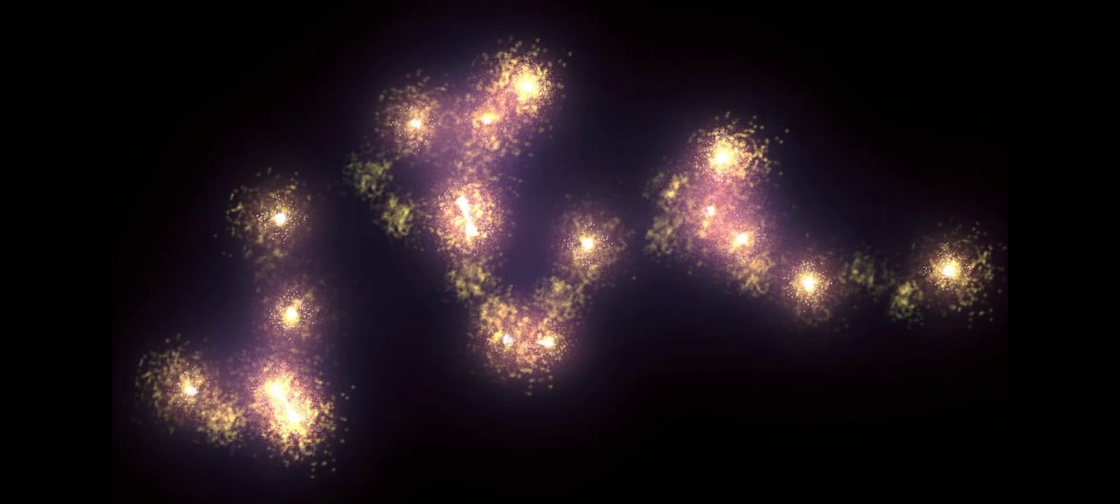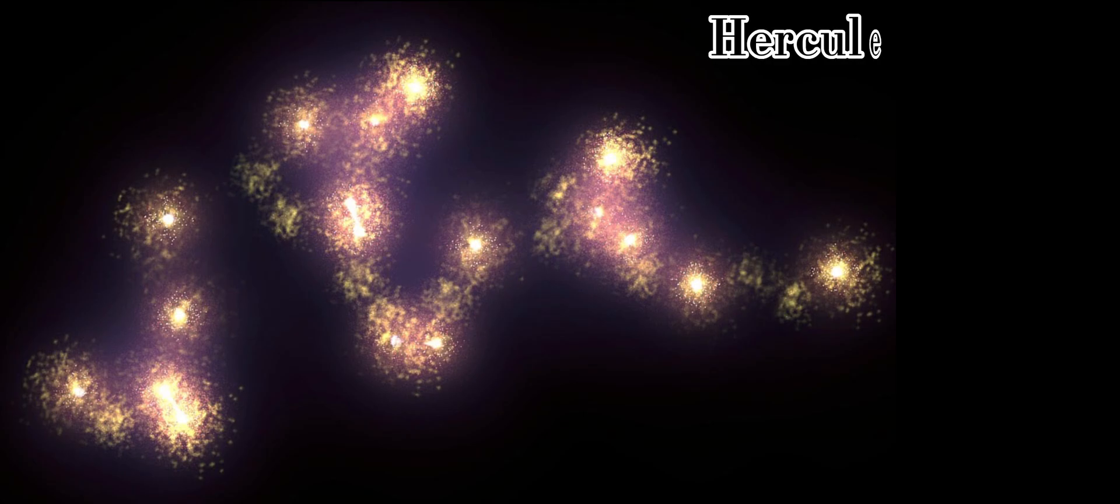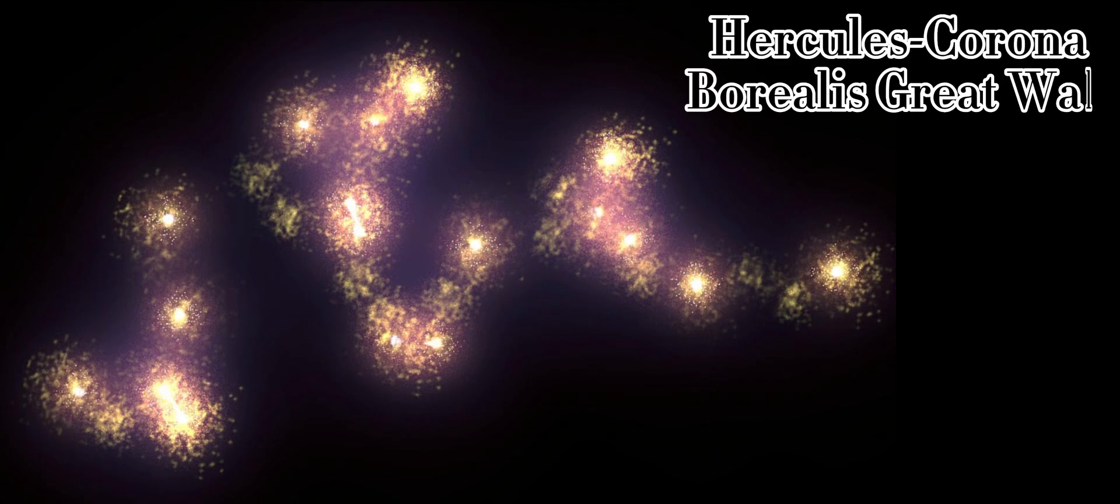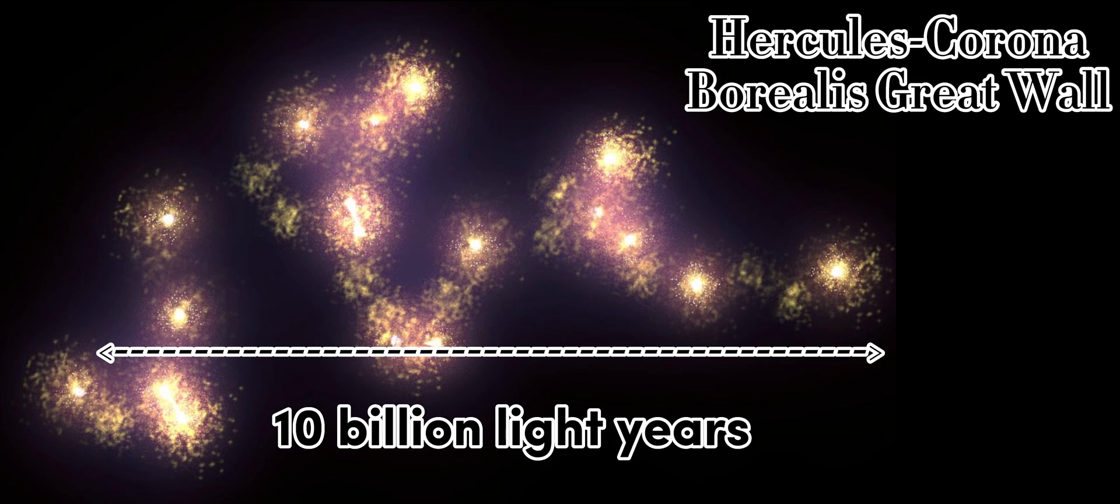Well, this is a supercluster of galaxies called the Hercules-Corona Borealis Great Wall. It is so wide that light takes about 10 billion years to move from one side of the entire structure to the other.